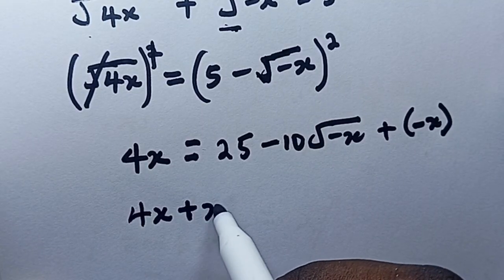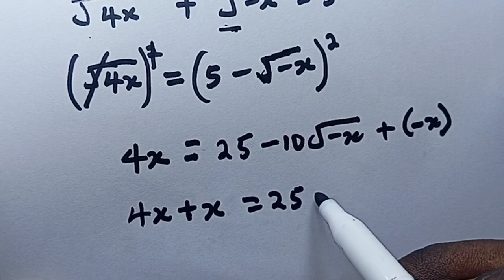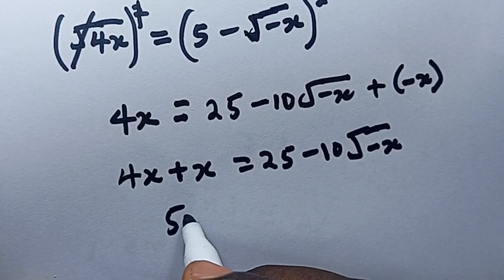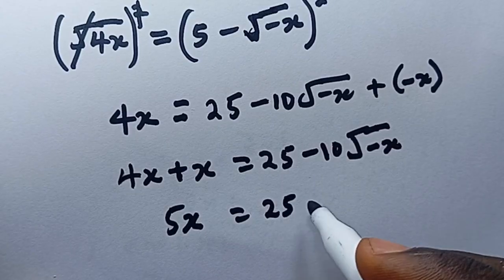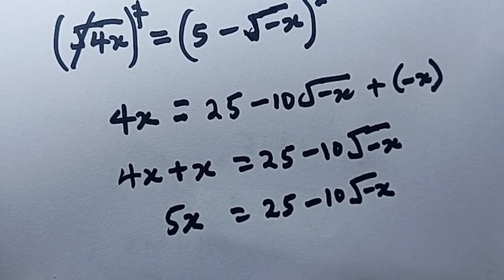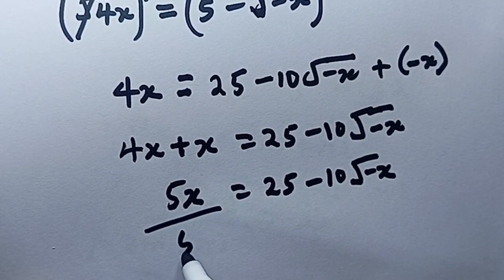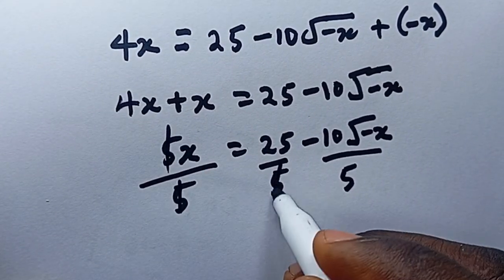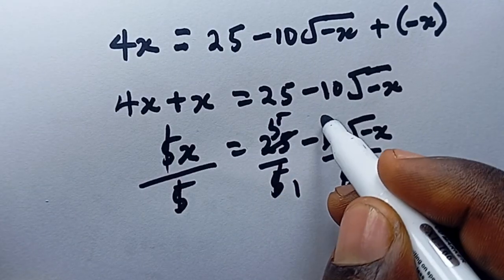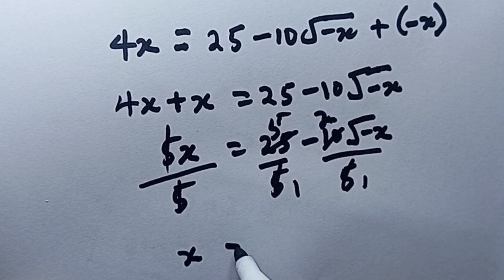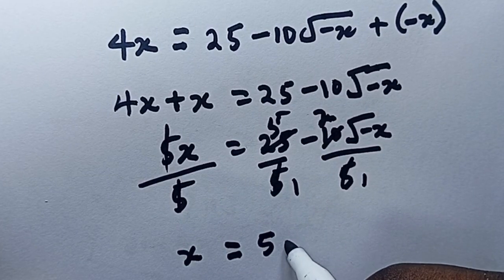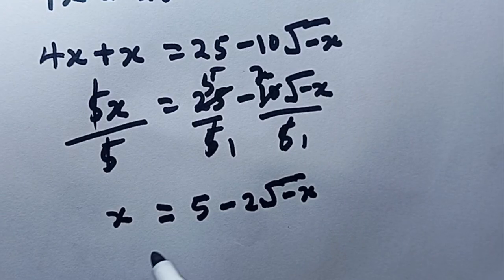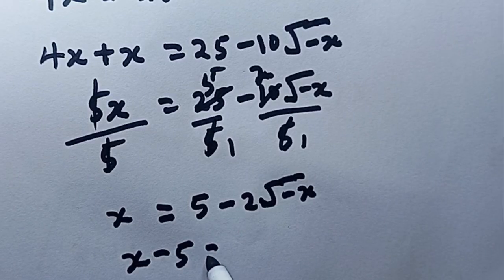Moving the -x term to the left: 4x + x = 25 - 10·root(-x), which gives 5x = 25 - 10·root(-x). Since all terms are multiples of 5, we divide through by 5 to get x = 5 - 2·root(-x).